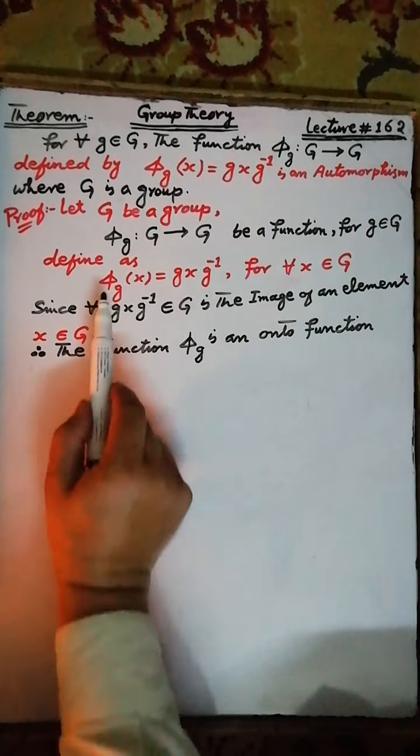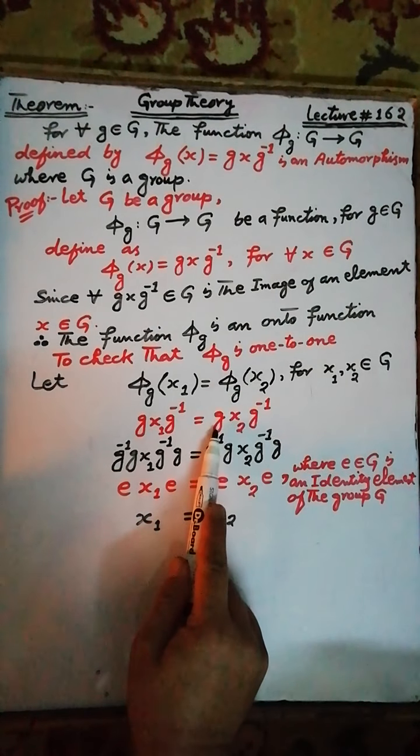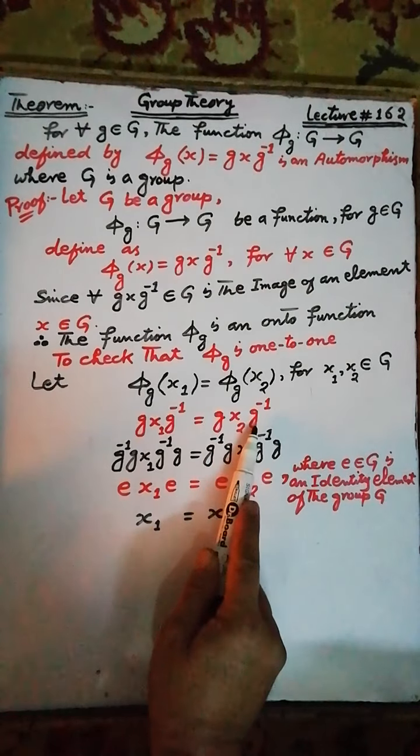Next, to check that the function π(g) is one-to-one: let π(g)(x₁) = π(g)(x₂), where x₁ and x₂ are elements of the group G. Then according to the above definition, π(g)(x₁) = gx₁g⁻¹ and π(g)(x₂) = gx₂g⁻¹.